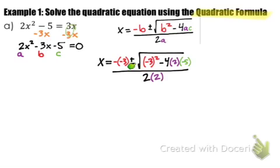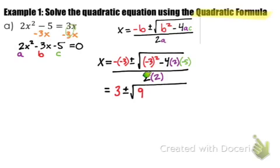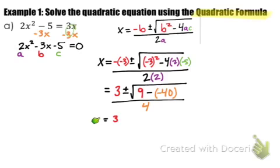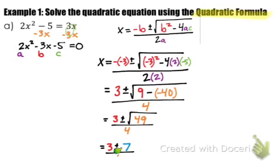Now simplify each component carefully. The opposite of negative 3 is 3, plus or minus the square root of negative 3 squared which is 9, minus 4 times 2 times negative 5 which is negative 40. So we have 9 minus negative 40, all divided by 4. That gives us x equals 3 plus or minus the square root of 49 — because 9 minus negative 40 is 49 — all over 4. The square root of 49 is 7, so we have 3 plus or minus 7, divided by 4.